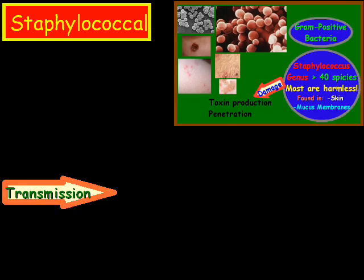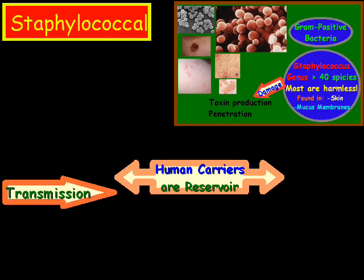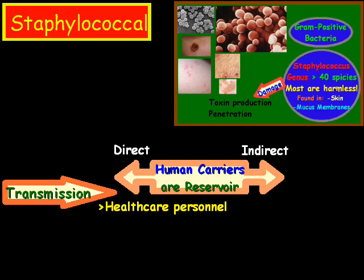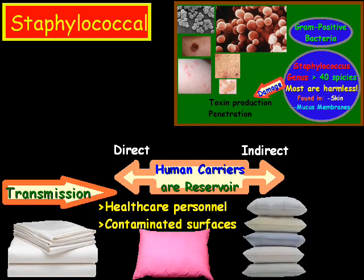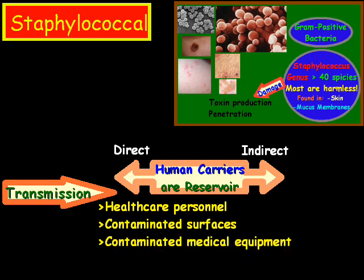When we look at the mode of transmission, human carriers are a major source of the infection — in other words, they act as a reservoir. Most of the time it is transmitted through direct contact with a person with a wound. However, sometimes it can be transferred through indirect contact. Healthcare personnel who don't wash their hands can also carry the contaminated bacteria. It can also spread via contaminated surfaces such as pillowcases, towels, or even contaminated medical equipment.